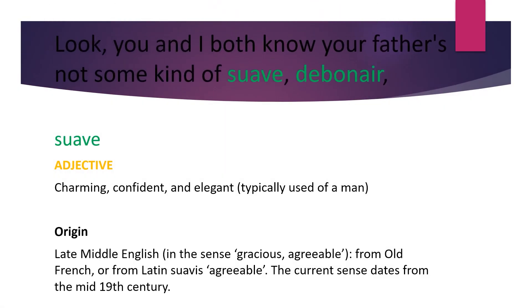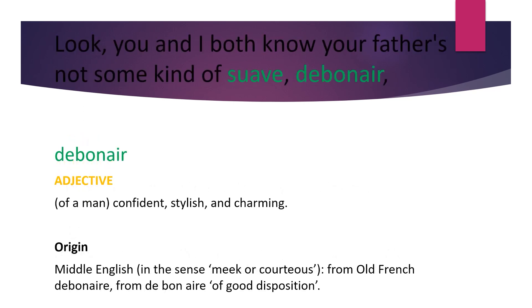Look, you and I both know your father's not some kind of suave, debonair bachelor of the month type. Suave. Adjective. Charming, confident, and elegant, typically used of a man. Origin, late middle English, in the sense gracious, agreeable, from old French or from Latin. The current sense dates from the mid-nineteenth century. Debonair. Adjective. Of a man, confident, stylish, and charming. Origin, middle English, in the sense meek or courteous, from old French.